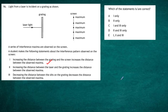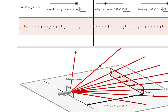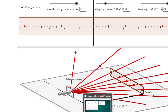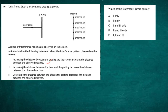Now what about the second statement: increasing the distance between the laser and the grating increases the distance between the observed maxima? Flicking back to our simulation, that's not going to be the case. It's only light that strikes the diffraction grating that starts to diffract. If you move the laser further away, you'll get a beam of light going towards the grating, but it won't affect anything on the screen. So statement two is false.